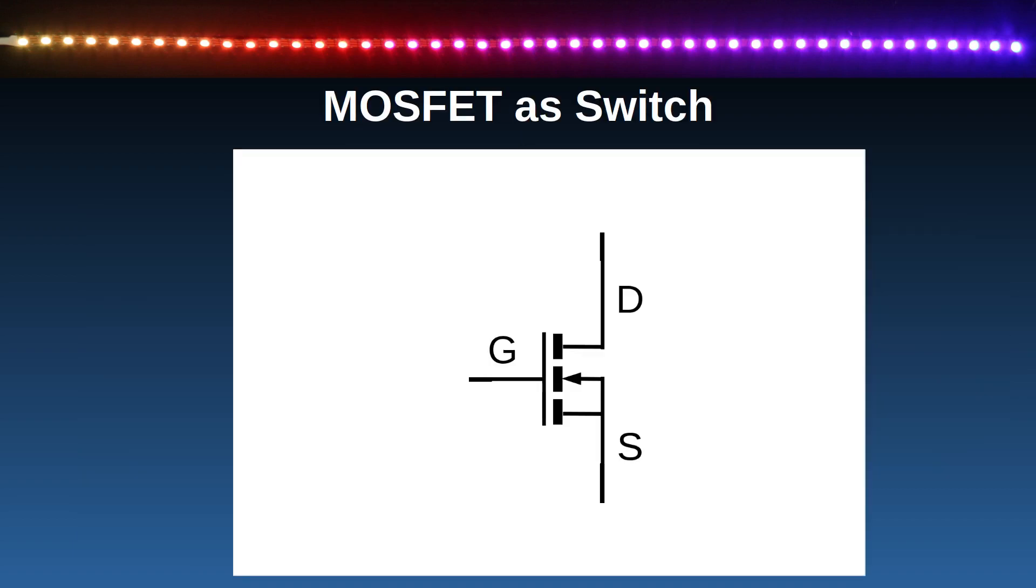First, I'll cover a little theory, but then we'll be getting into practical circuits a little later in the video. This is just going to cover the basics here. As a quick recap, MOSFETs are a type of transistor with three pins: a drain, gate and a source.